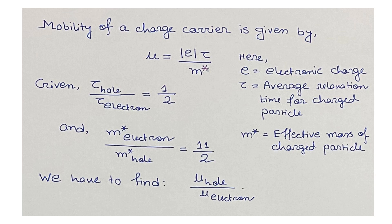From the Drude theory of free electron gas model, the mobility of a charge carrier is given by μ = |e|τ/m*, where e is the electronic charge (1.6 × 10⁻¹⁹ coulomb), τ is the average relaxation time for the charge particle (also known as mean scattering time), and m* is the effective mass of the charge particle.